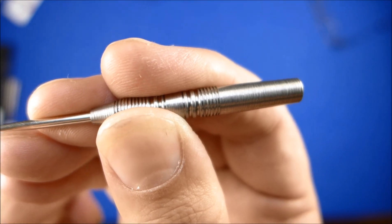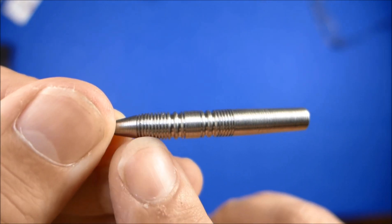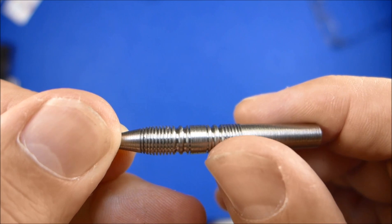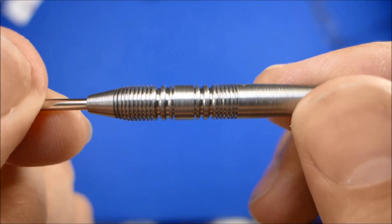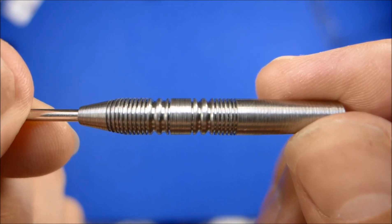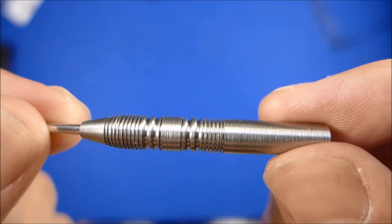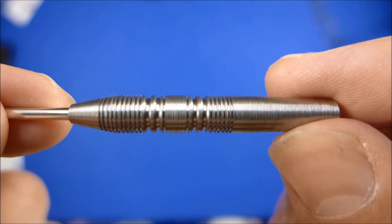So my grip is around about there, so it covers just that part of the barrel. That other part is just for effect really. I think he's done a pretty good job of the darts. I've been playing with them and they fly really nicely. I'll have a few throws just so you can see them in flight.